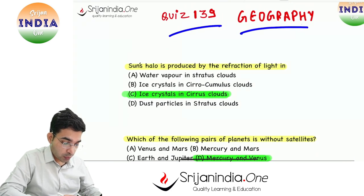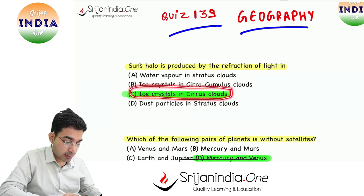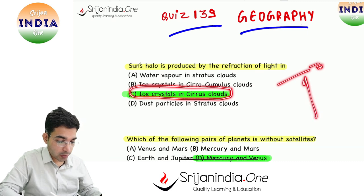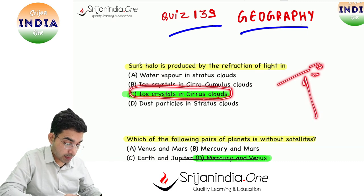Geography question: Sun ka halo is produced by the refraction of light in ice crystals in cirrus clouds. Cirrus clouds are feather-like and are high altitude clouds.